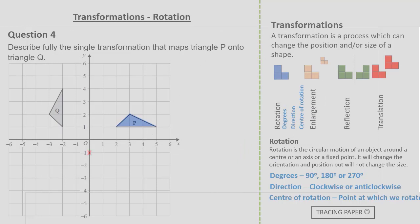Looking at our triangle P let's pick this point as our centre of enlargement. Rotating 90 degrees anticlockwise we have arrived at triangle Q.